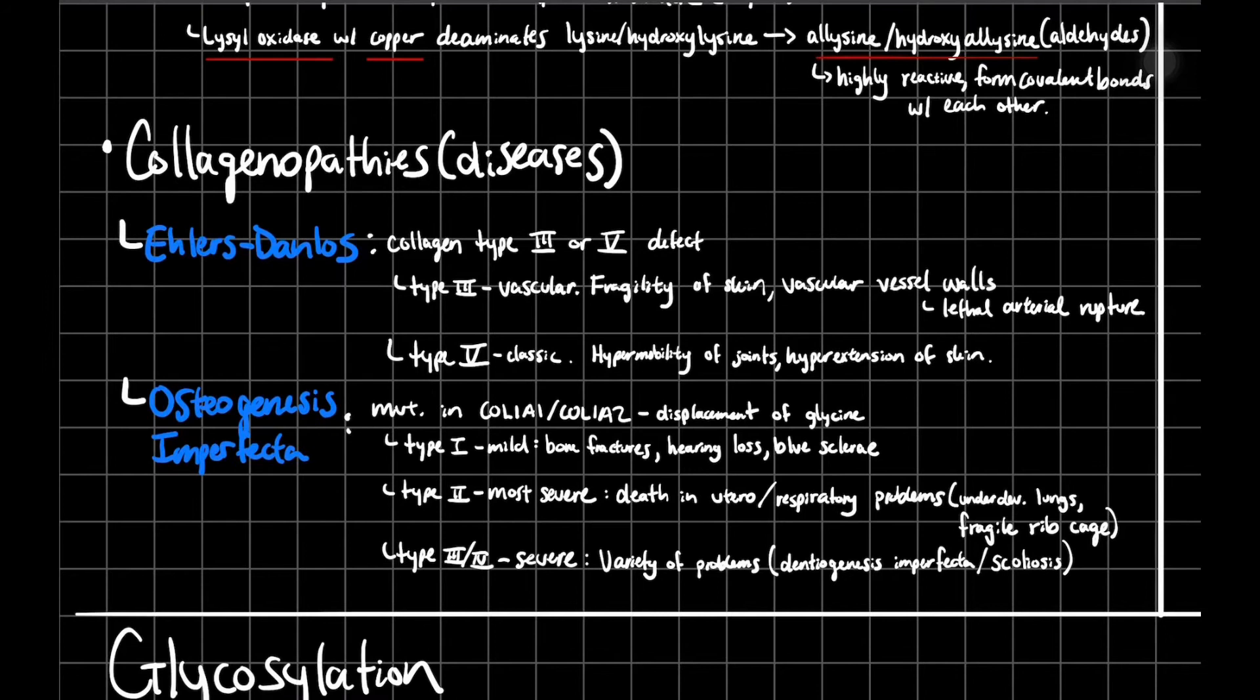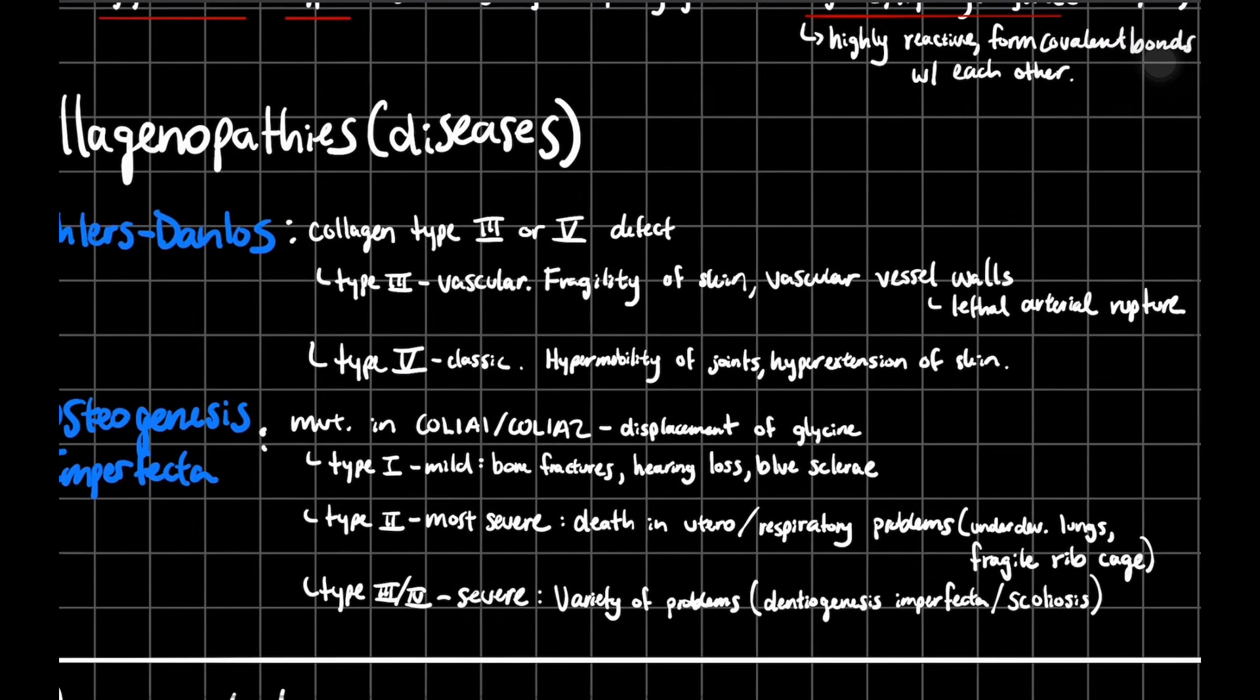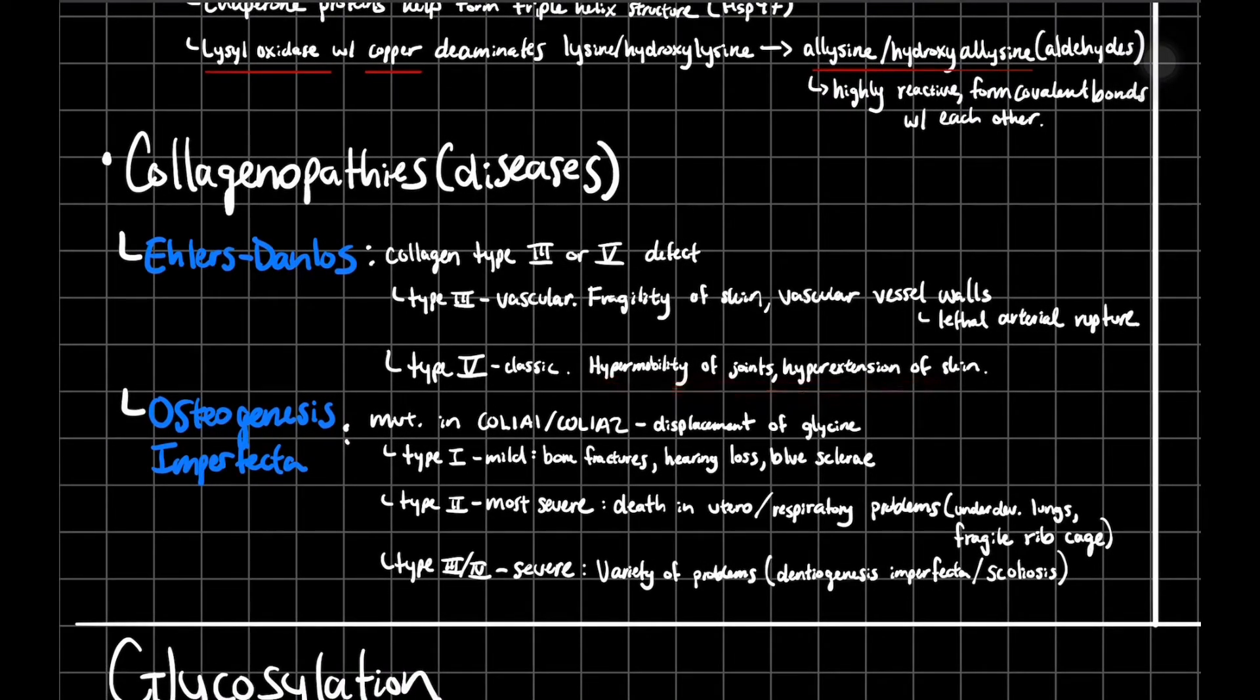Now there's going to be certain diseases associated with collagen, and it's going to be Ehlers-Danlos or Osteogenesis imperfecta. Ehlers-Danlos is going to be a defect in your collagen type 3 or 5. Your type 3 is going to be kind of atypical, and it's going to present with fragility of your skin. It's going to have weakness in your vascular vessel walls. And the most severe is going to have lethal arterial rupture. As you can imagine, you're going to have a lot of internal bleeding with that. Type 5 is going to be classic. It's more commonly presented in Ehlers-Danlos, and it's going to be resulting in hypermobility of your joints and hyperextension of your skin. So that's like if somebody shows you their hitchhiker's thumb, but it can go back a lot further than that, and then for those who can stretch their neck out for a foot. So it's kind of cool, but at the same time, it is a problem.